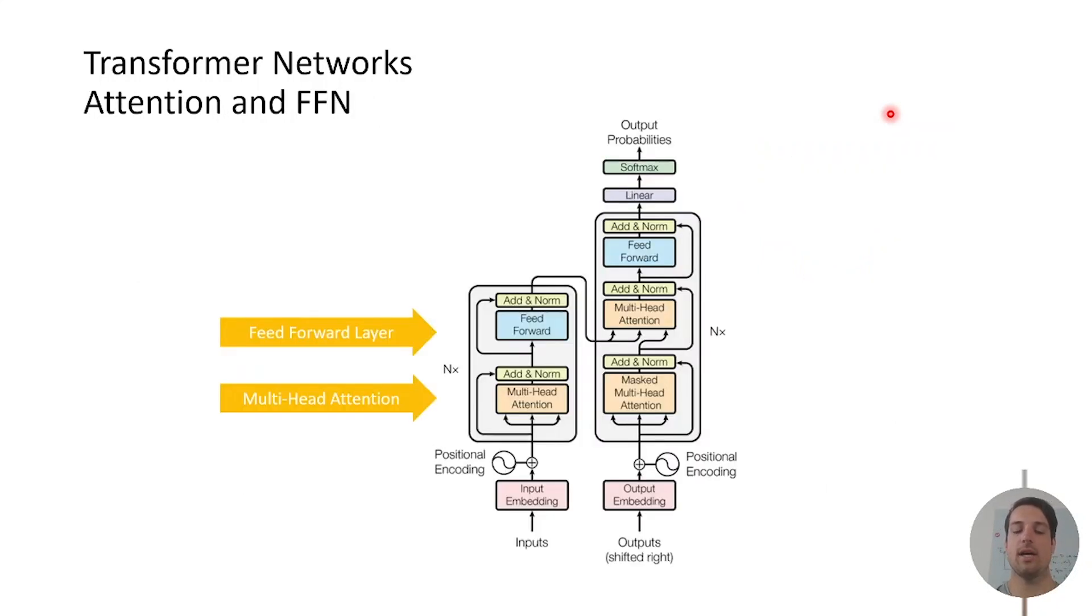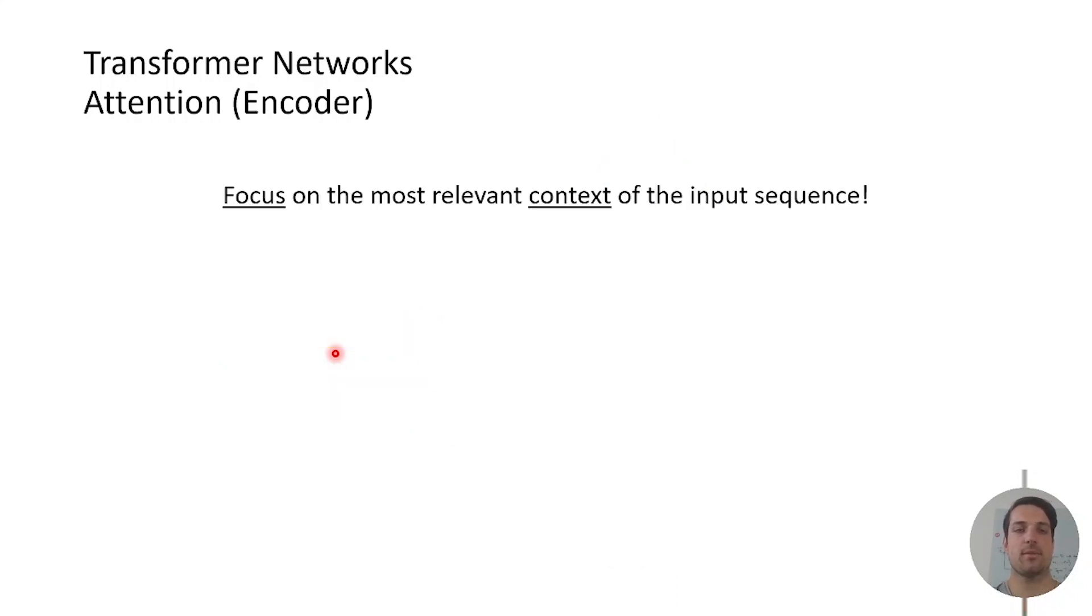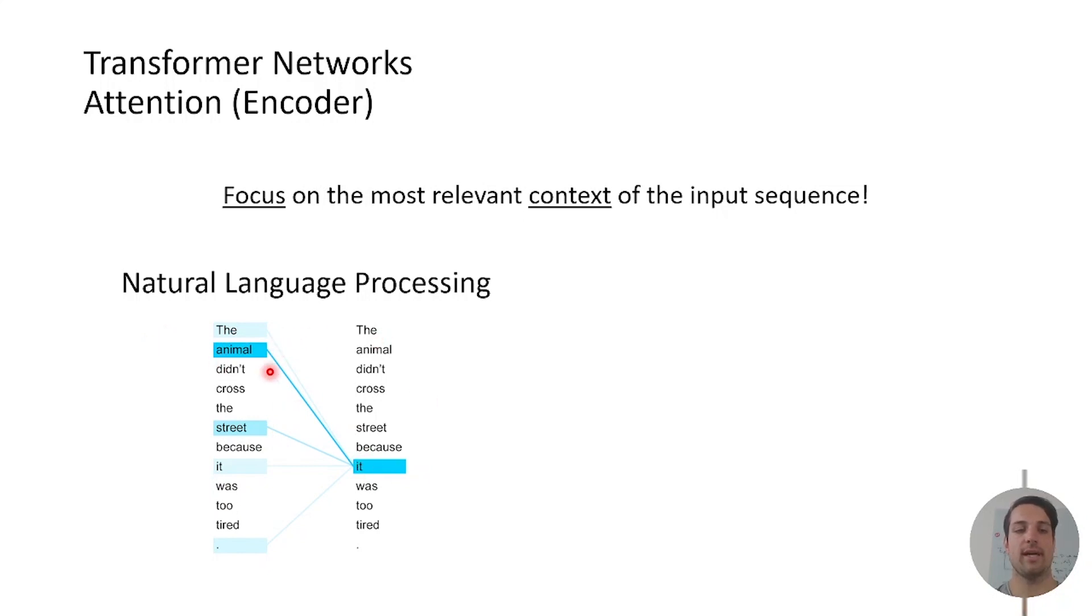After we now have the embedded input space positional encoded we now come to the most important part of the algorithm which is the multi-head attention. The aim of it is to focus on the most relevant context of the input sequence. For NLP tasks we should know when analyzing sentences on which part specifically of the sentence the most context should be paid on. This is shown here for the word 'it' for example.